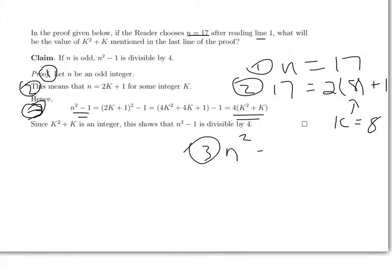So n squared minus 1 for me is going to be 17 squared minus 1, which is 288. And I can compare that to versus what I get here,